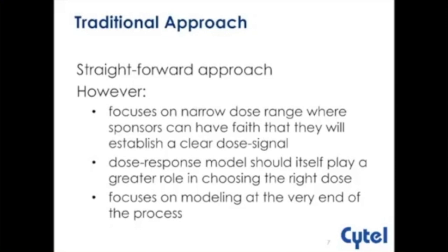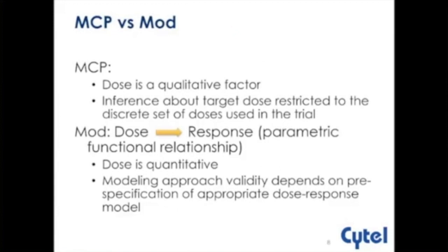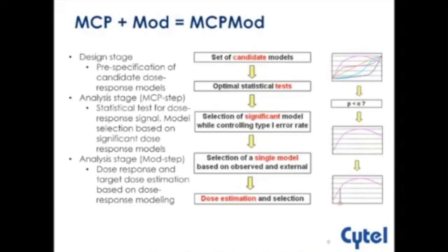MCP-MOD consists of two separate components. The MCP component treats dose as a qualitative factor and makes inference about the target dose restricted to the discrete set of doses used in the trial. The MOD component uses a parametric functional relationship to model the relationship between dose and response, treating dose as a quantitative factor. The validity of the modeling approach depends on pre-specifying appropriate dose-response models. These two components are put together to construct the MCP-MOD methodology, replacing traditional pairwise comparisons with dose-response modeling.